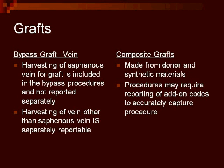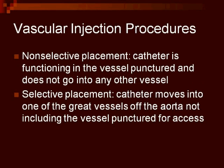Bypass grafts include the harvesting of the saphenous vein in the code. However, if another vein other than the saphenous vein is harvested, the vein is separately reportable. Composite grafts are made from donor or synthetic materials and may require the use of add-on codes to accurately code the procedure. Vascular injection procedures are divided into selective and non-selective placement, and careful attention to the physician's notes is necessary.